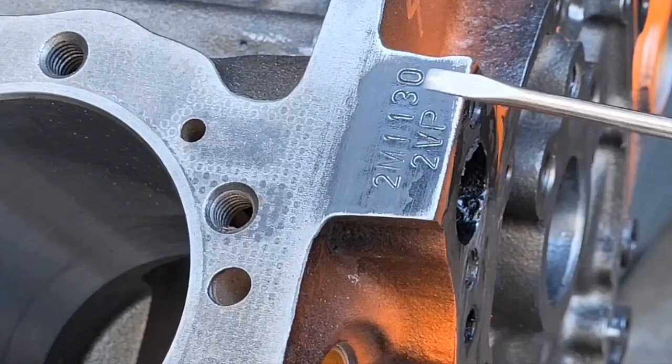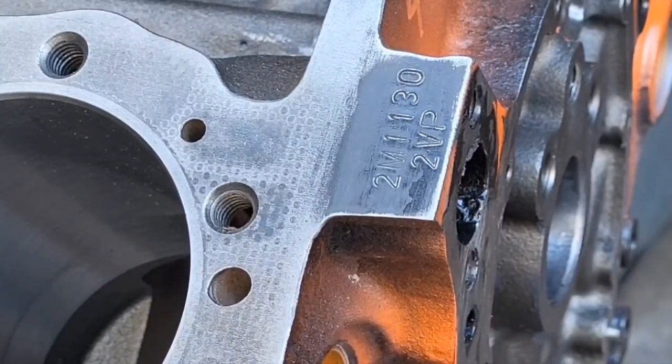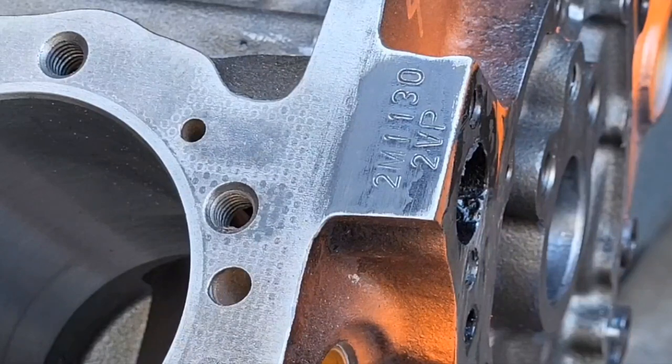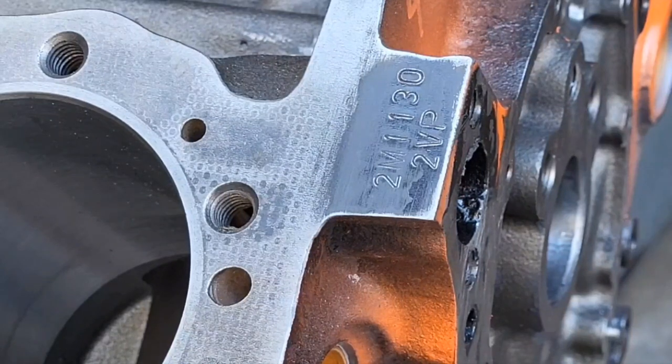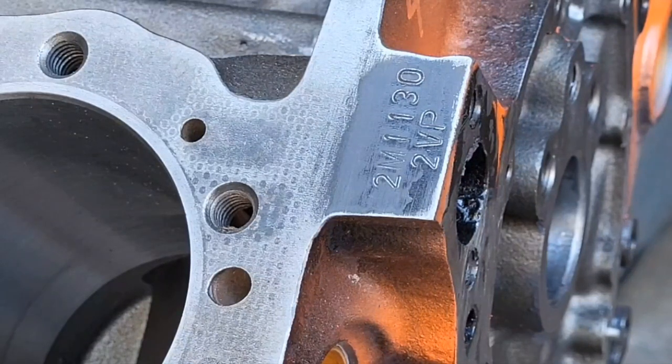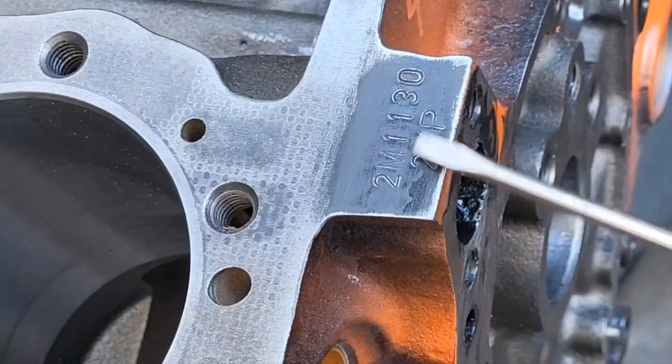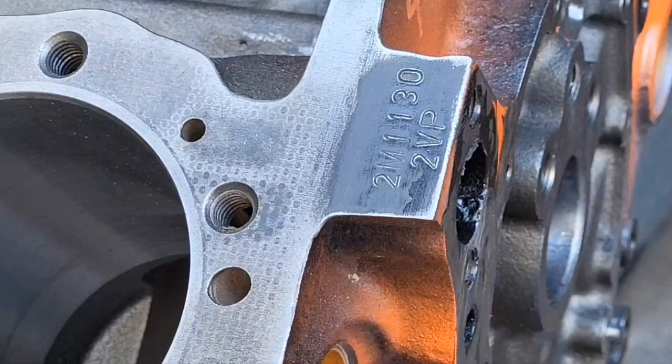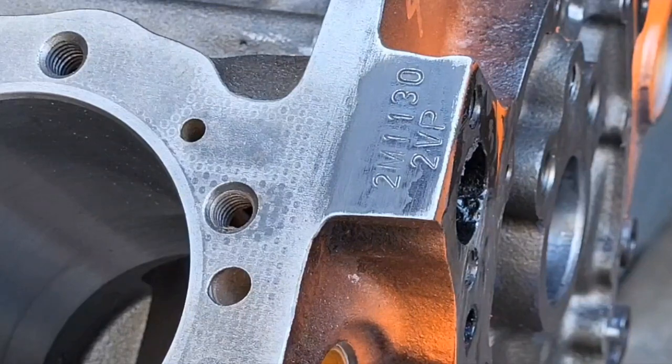You can see from this pad that this block, given the fact that you can read these numbers, has never been to the machine shop and has never been decked. You want to make sure that plane where all the cylinder bore holes are bored into is 90 degrees to the crank. If you see a block like this and you can read the numbers that well, you know that block's never been to the machine shop, and barring any obvious defects, it's probably a good block to start with.